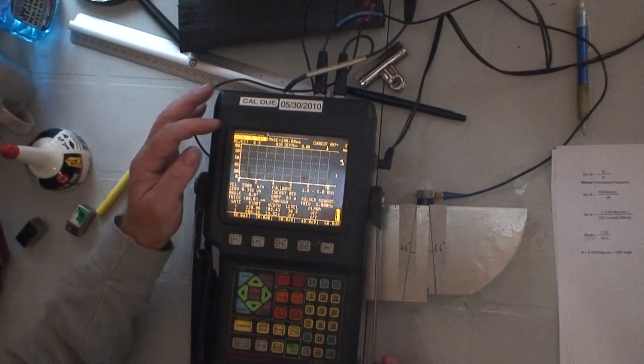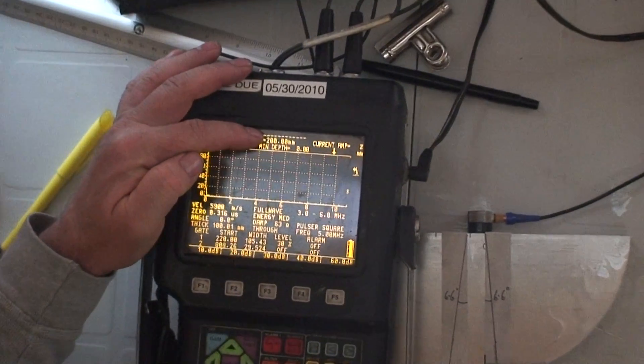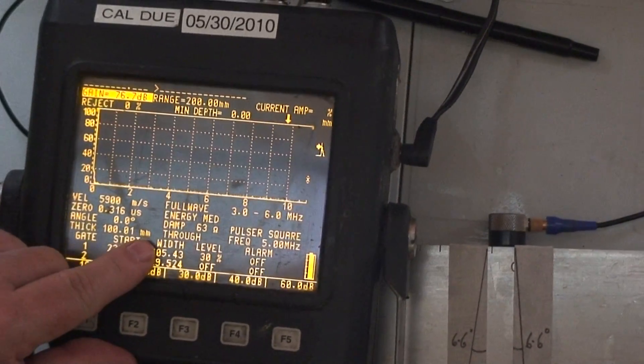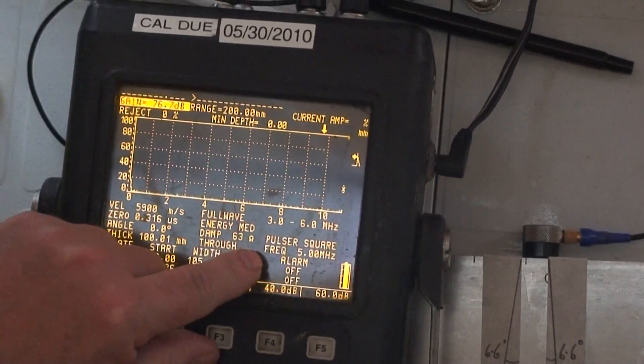My UT set is set at 200mm test range, so the 100mm appears in the middle. I put it at 3 transmission, 5 MHz.